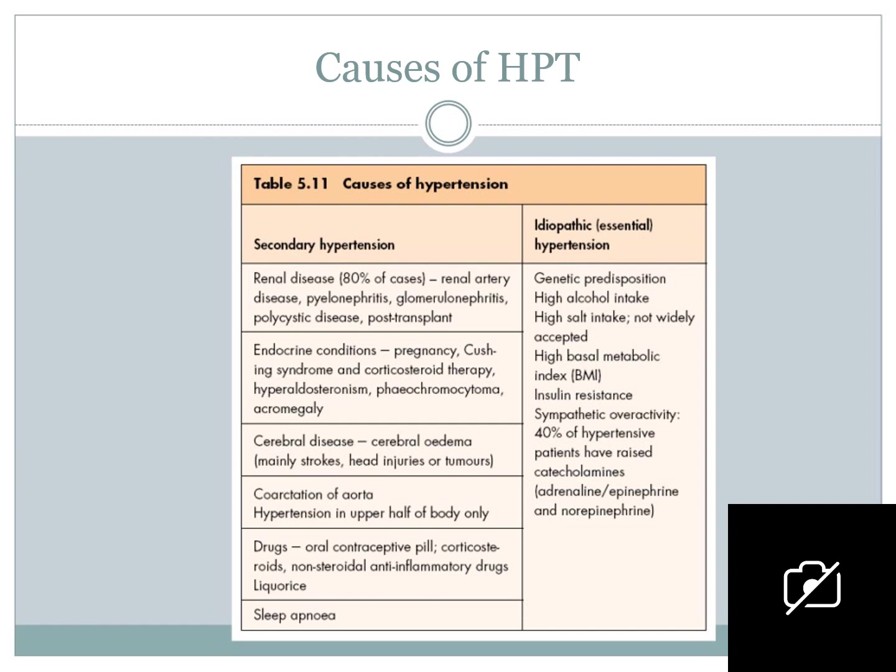Other secondary hypertension causes include cerebral disease, cerebral edema, strokes, head injuries or tumors, coarctation of the aorta (hypertension in upper half of body only), and drugs such as oral contraceptive pill, corticosteroids, NSAIDs, licorice, or sleep apnea. Idiopathic essential hypertension causes include genetic predisposition, high alcohol intake, high salt intake, high BMI, insulin resistance, and sympathetic overactivity — 40% of hypertensive patients have raised catecholamines (adrenaline, epinephrine, and norepinephrine).